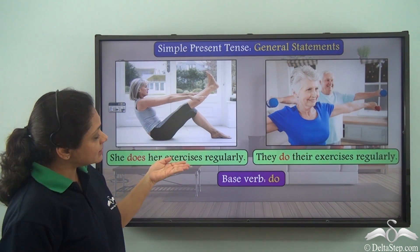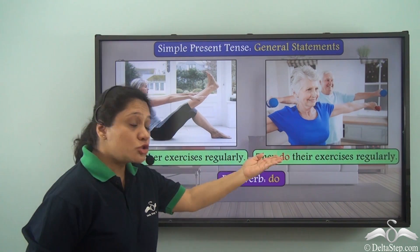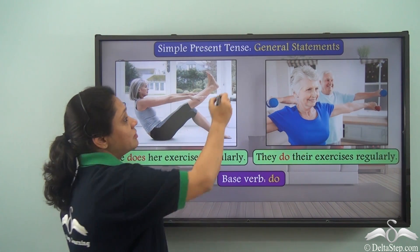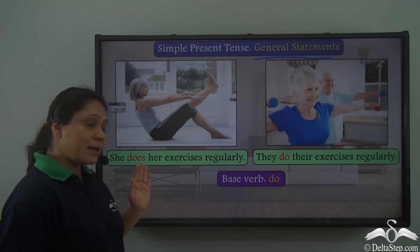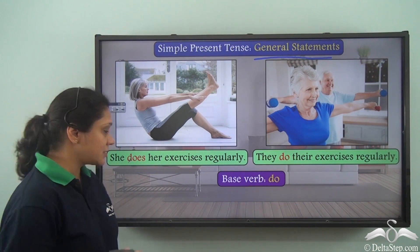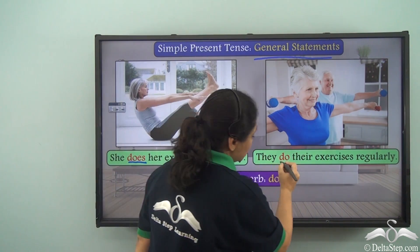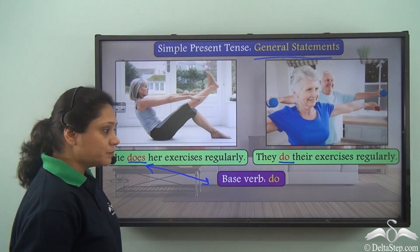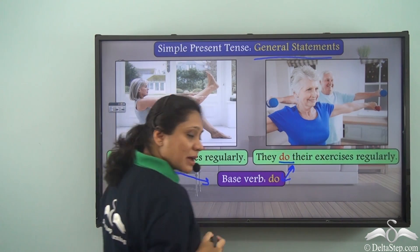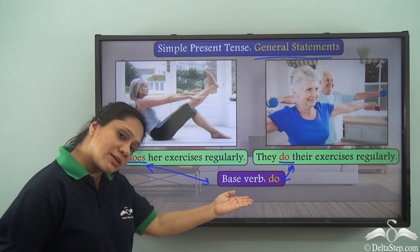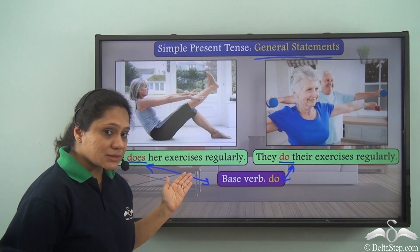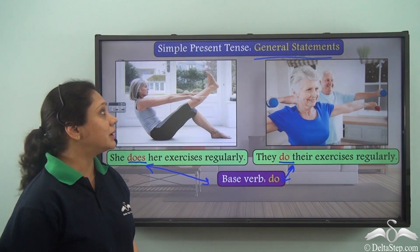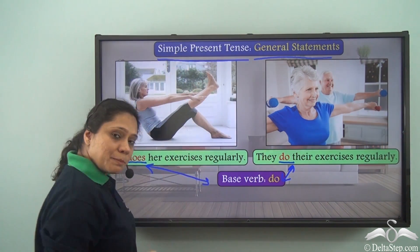She does her exercises regularly. They do their exercises regularly. Both sentences are general statements. The verbs are does and do. Does is the singular form of the base verb do, and do is the same as the base verb, so the plural verb is the same as the base verb. So both these sentences are in the simple present tense.